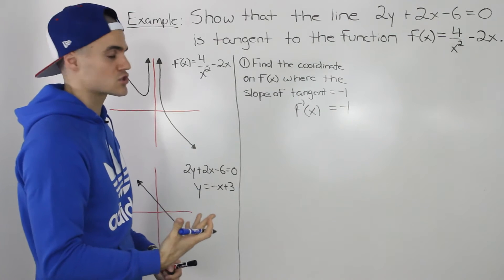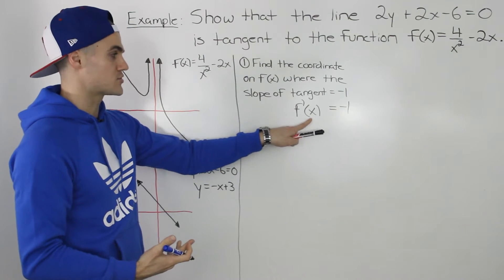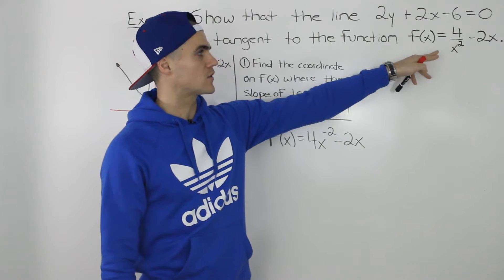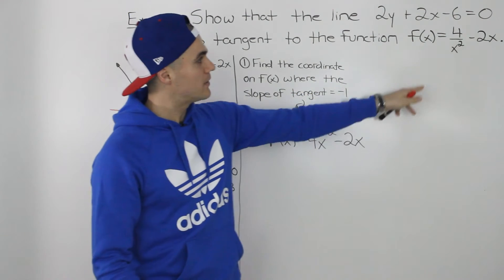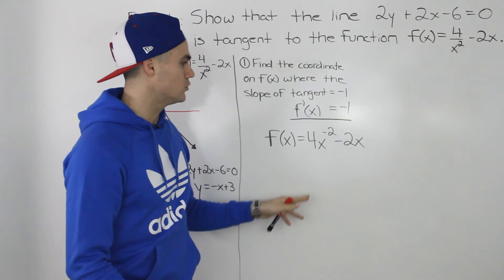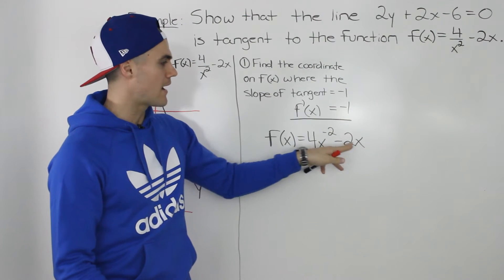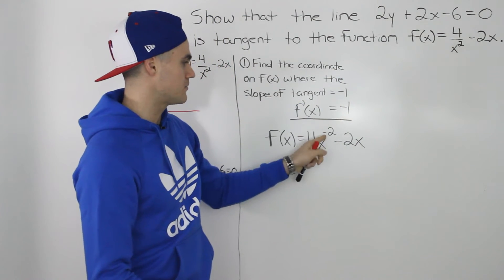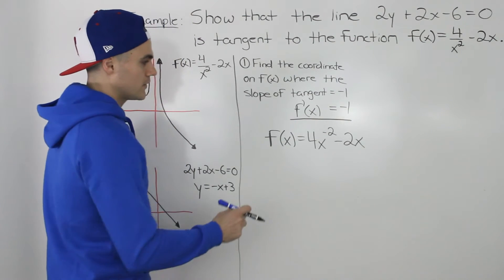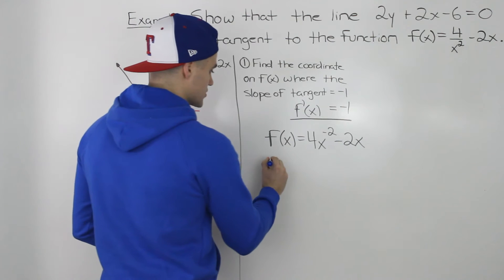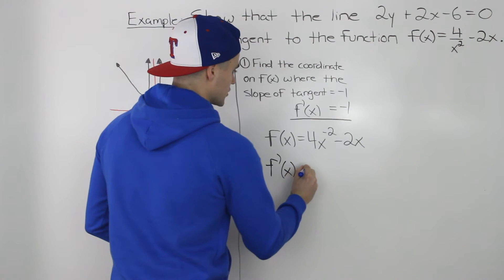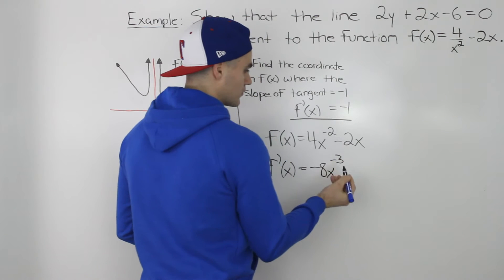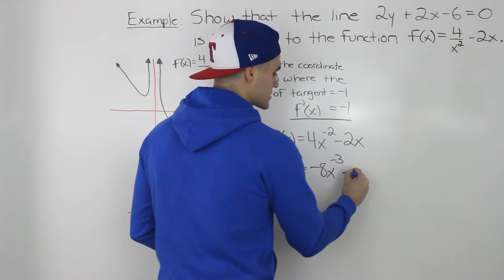The derivative always gives us the slope of the tangent at a specific x value. So at what x value is the slope of the tangent going to equal negative 1? To find the derivative of 4 over x squared minus 2x, I'll rewrite it by bringing x squared up to the numerator, so it becomes 4x to the negative 2 minus 2x. Now we apply the power rule on each term: bring the negative 2 down, 4 times negative 2 is negative 8, subtract 1 from the exponent to get negative 3, and the derivative of negative 2x is just negative 2.